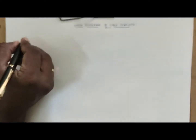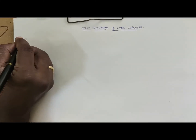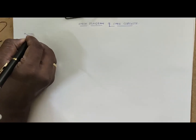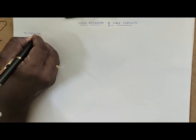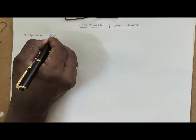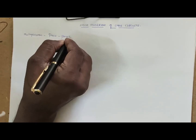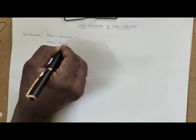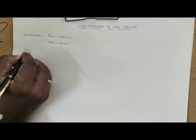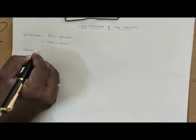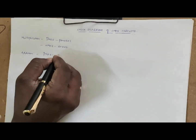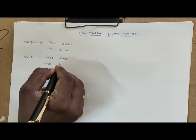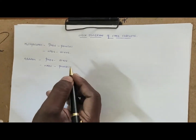Before going to CMOS circuits, one important thing to know: for multiplication, PMOS transistors are connected in parallel and NMOS transistors are in series. For addition, PMOS are in series and NMOS are in parallel. We have seen this in the last video as well.